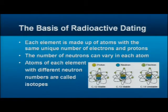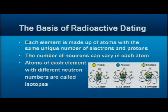For example, you've got carbon-12, carbon-13, and carbon-14. The difference is that there are more neutrons — two more neutrons in carbon-14 than in carbon-12. These three different types of carbon atoms are called isotopes.